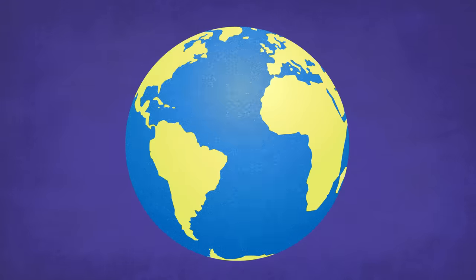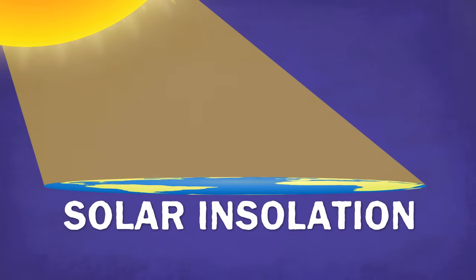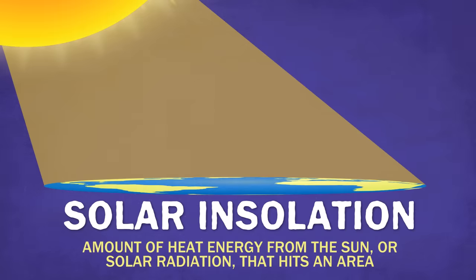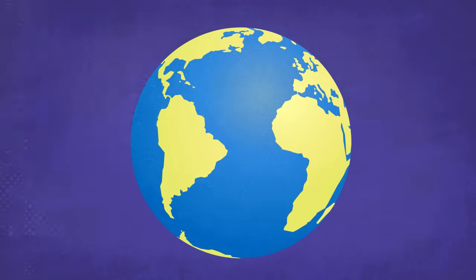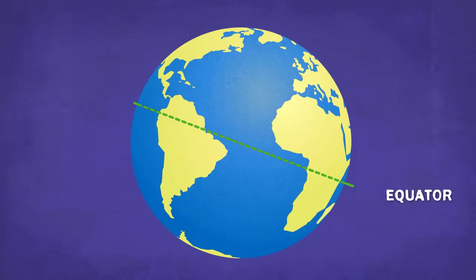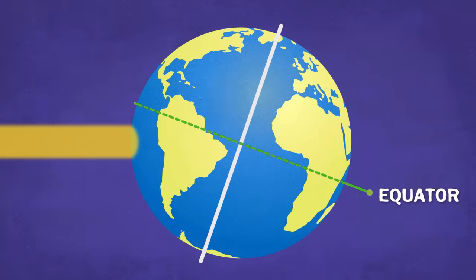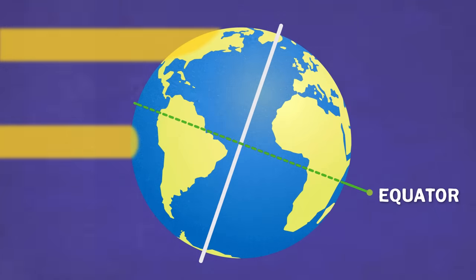If our planet wasn't more or less spherical and was like a flat sheet, everywhere on Earth would experience the same solar insolation. Solar insolation is the amount of heat energy from the sun, or solar radiation, that hits an area. But because Earth is a sphere, solar energy hits different parts of the globe at different angles. The equator is so warm because incoming solar radiation is perpendicular to the surface. Up at the poles, that angle is more oblique — the sun emits the same amount of heat energy, but at the equator that energy is more concentrated, while at the poles it's more spread out.